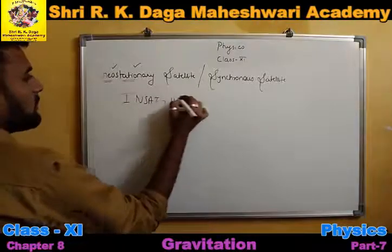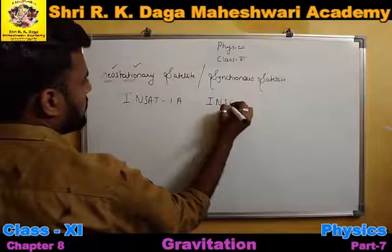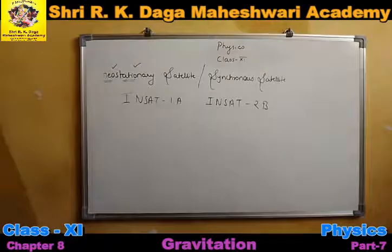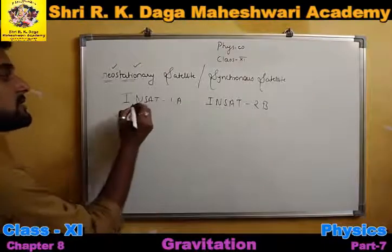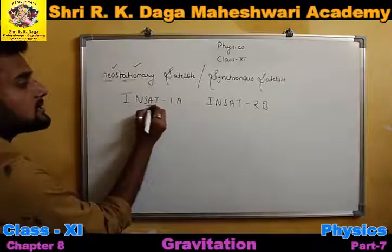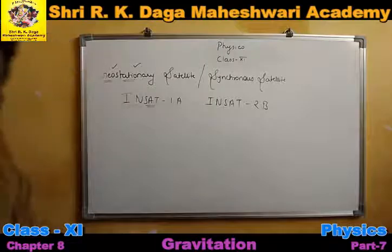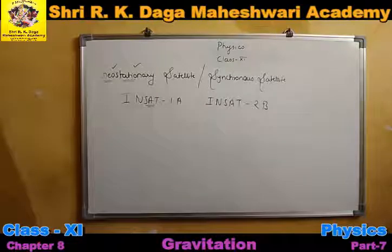INSAT 1A and INSAT 2B are examples of geostationary satellites, also called synchronous satellites. INSAT stands for Indian satellites — these are Indian satellites.